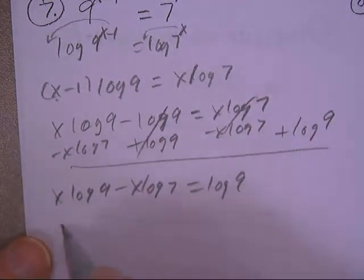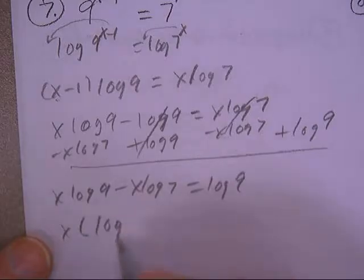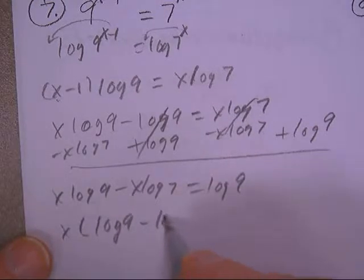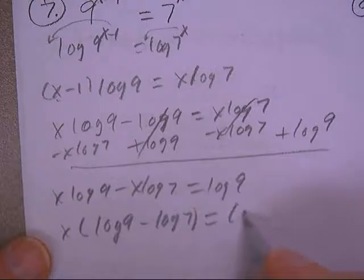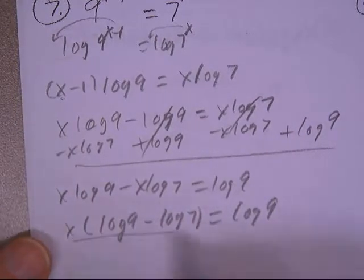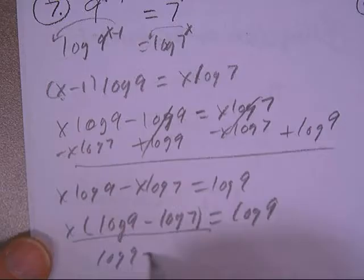And look, I've got x in both terms, so factor out x. Then divide by log 9 minus log 7.